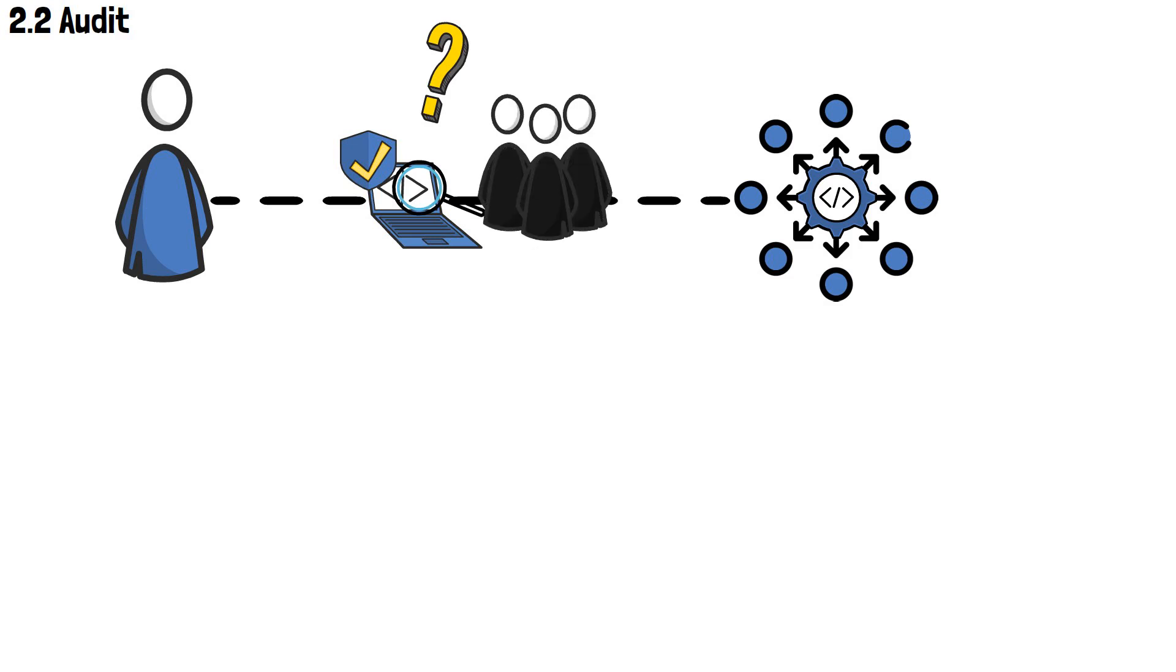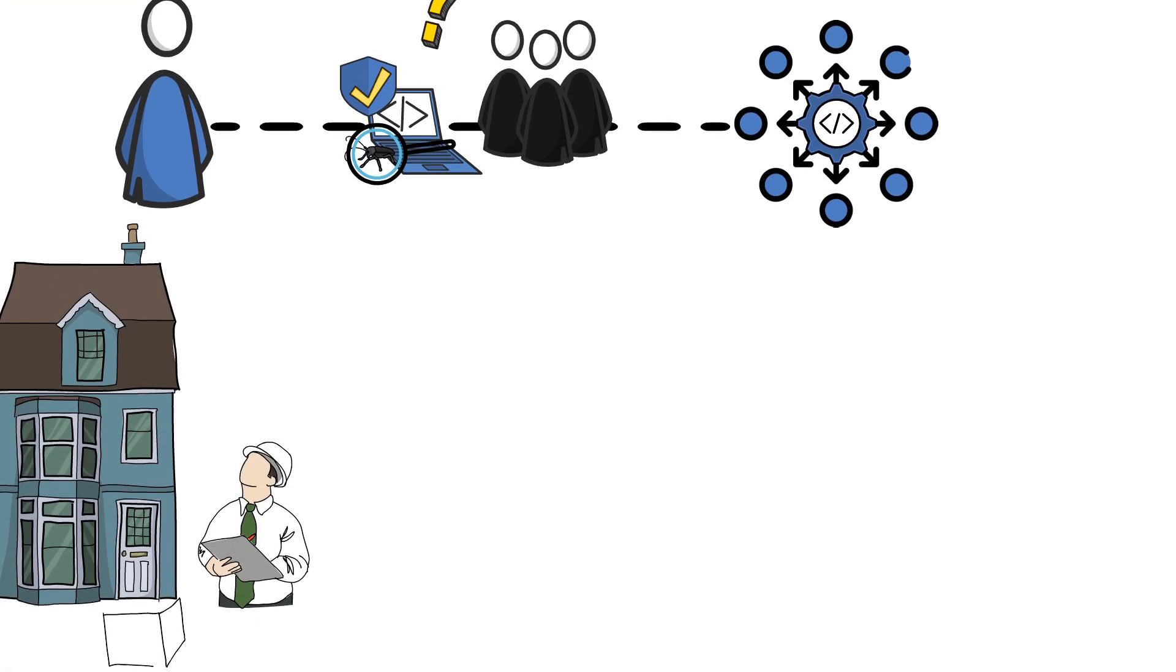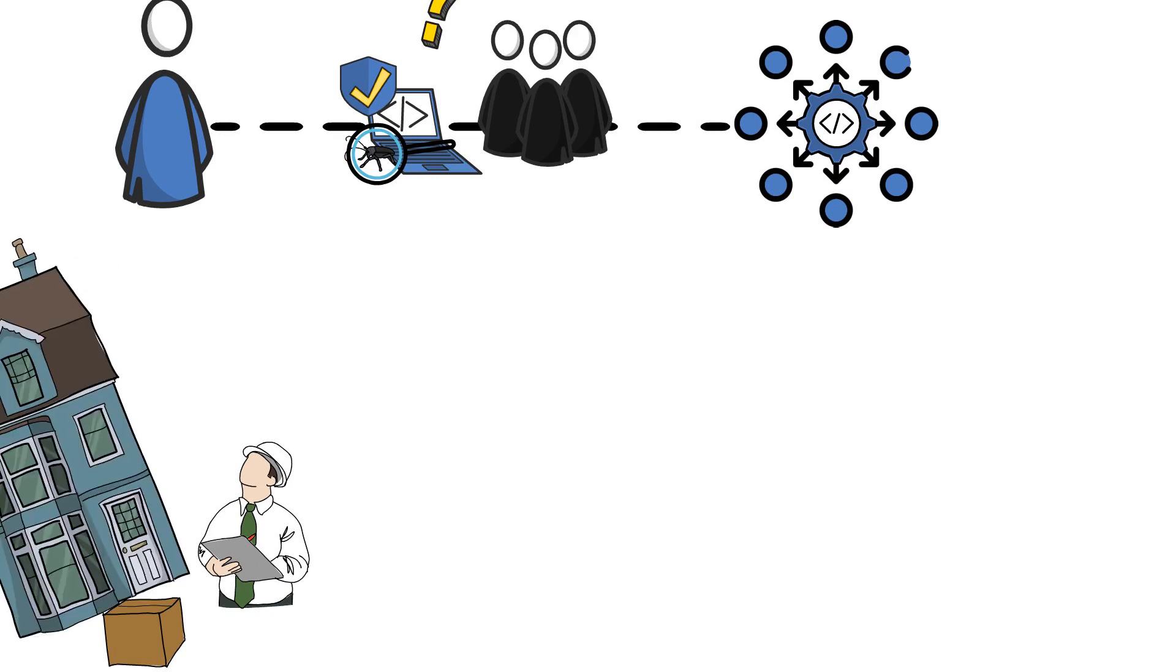An audit is a thorough examination of the dApp's codebase by a team of experts. It's conducted in order to identify and fix any vulnerabilities or bugs that may be lurking within the dApp's architecture. It literally is the DeFi version of a structural inspection that's performed on buildings. You don't want to buy an apartment in a house that has walls built out of cereal boxes, now do you?